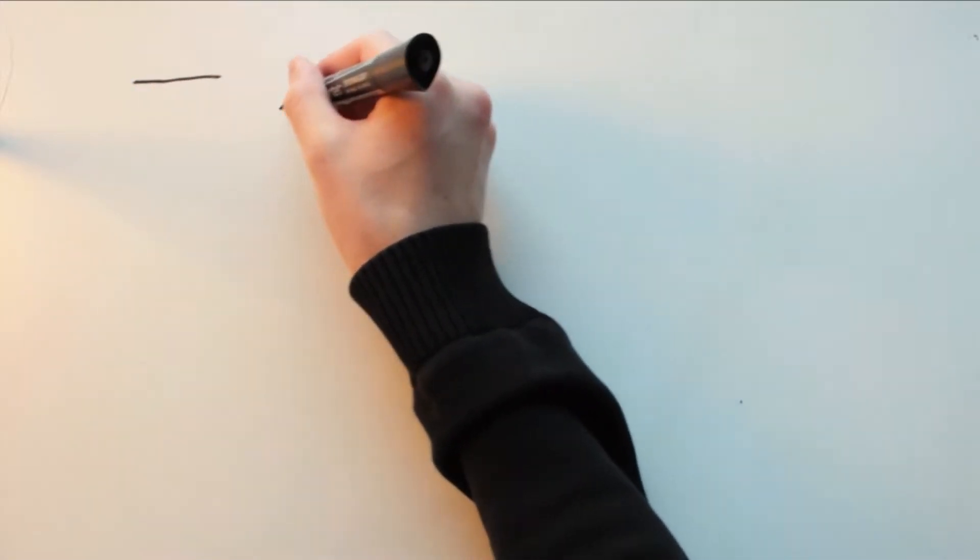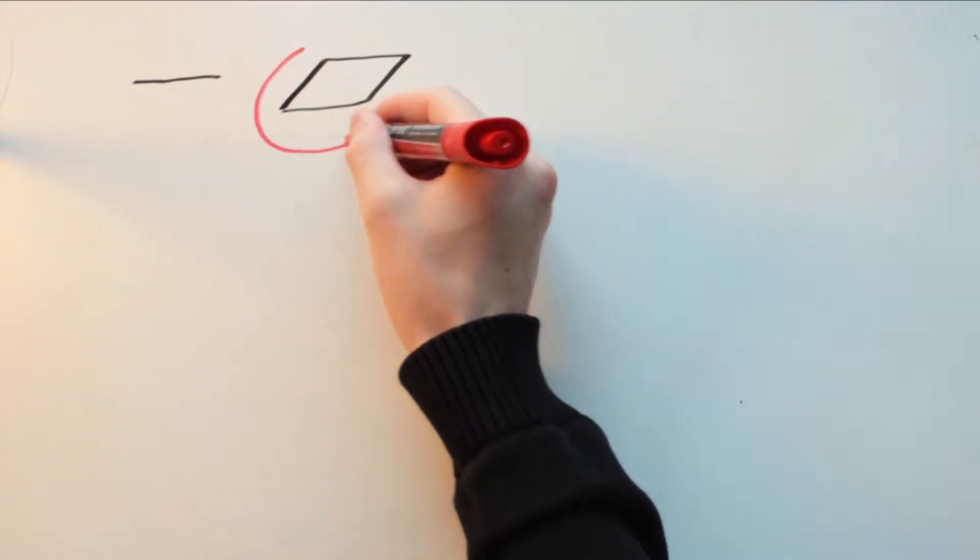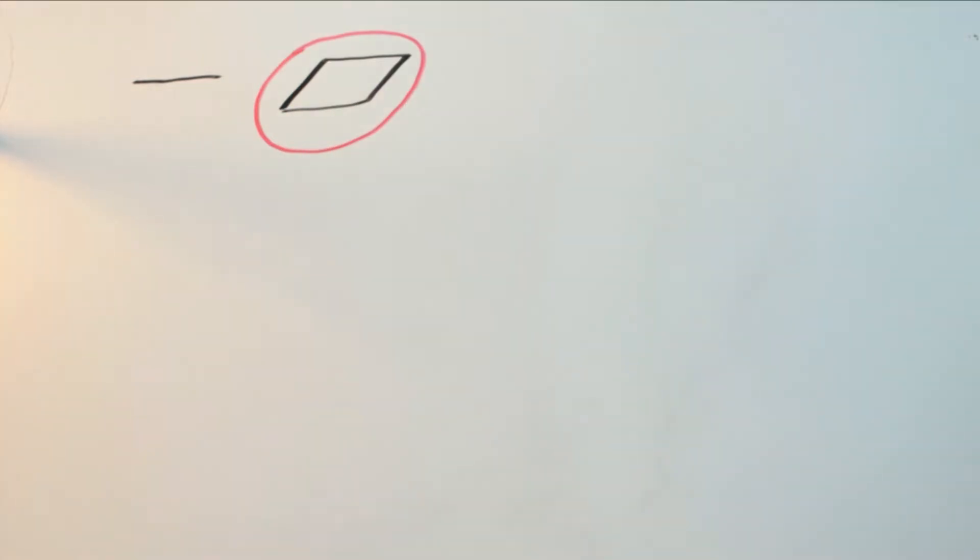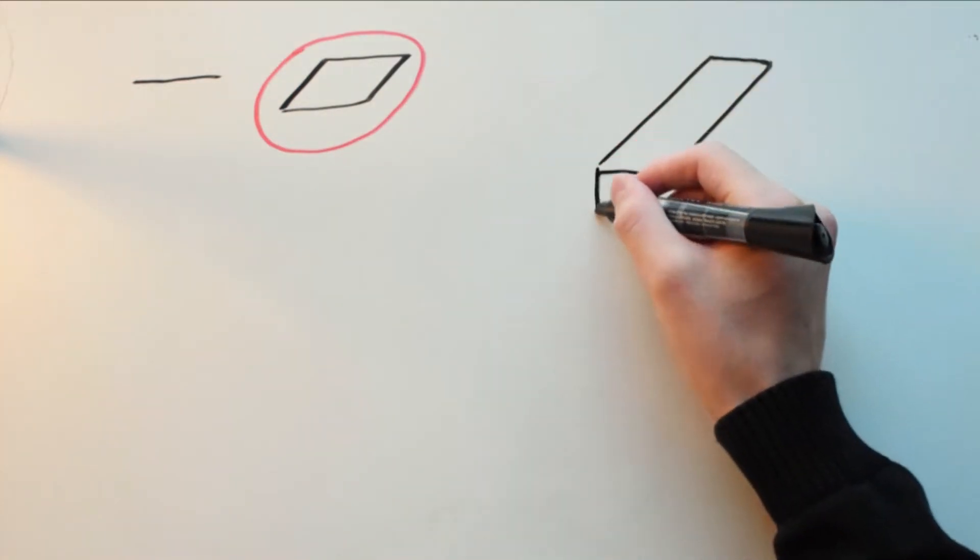So in this video, I'll be talking about straightness and flatness on engineering drawings. These are both types of form control, which basically means that they don't control the size of a feature, they only control the shape.